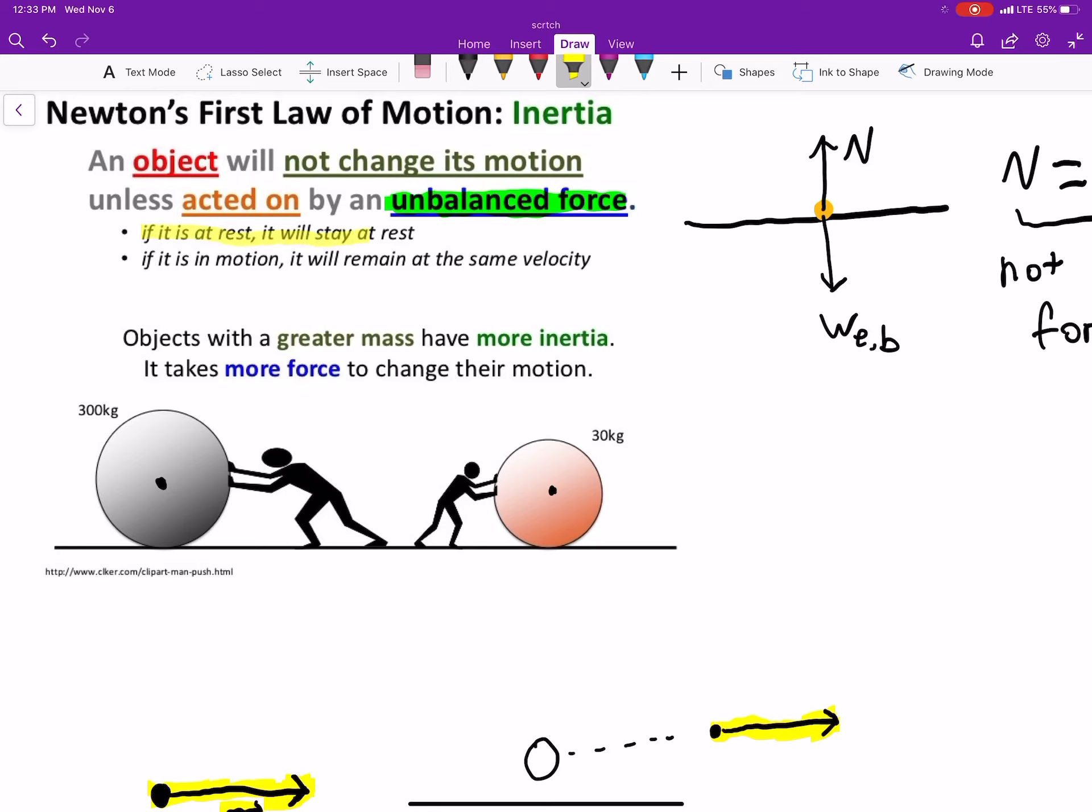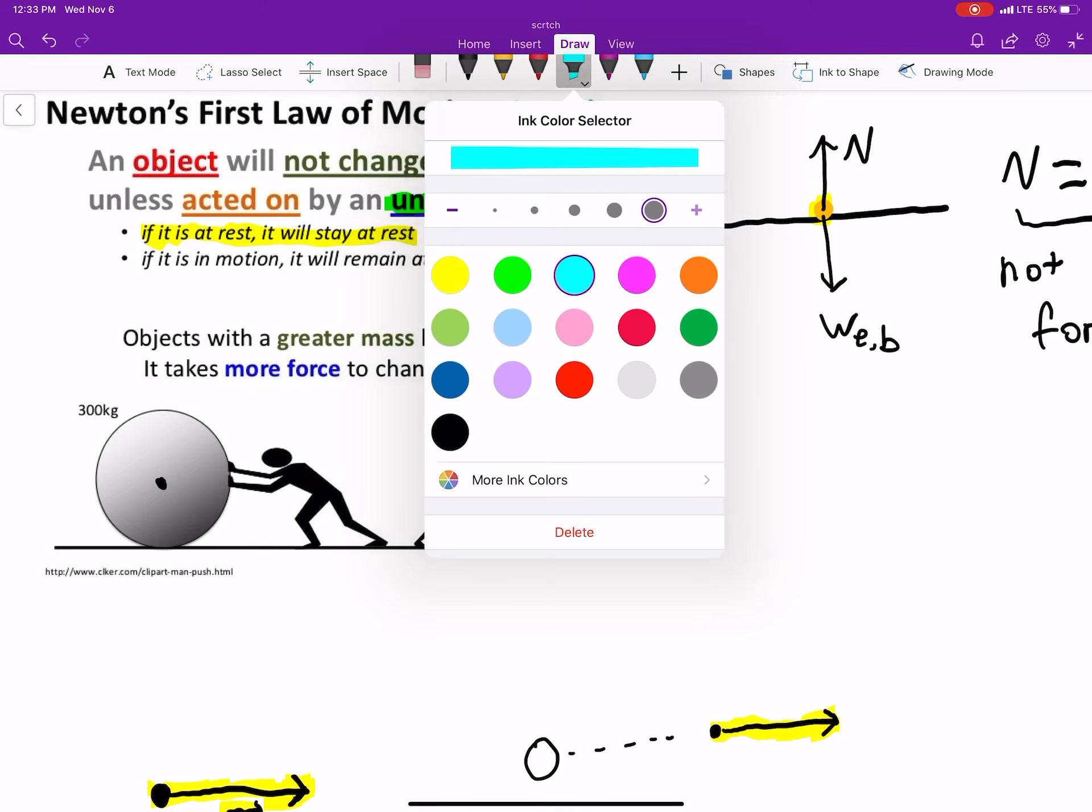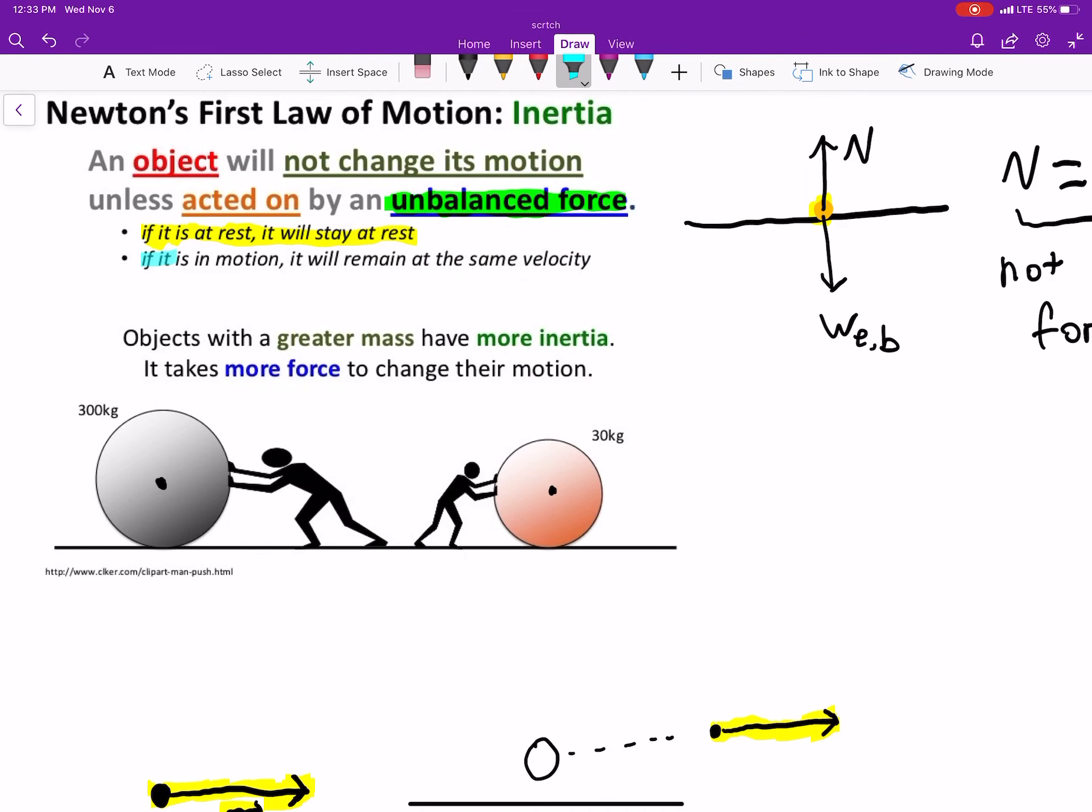If an object's at rest, it'll stay at rest. That makes sense in everyday life. If you put a ball on the table, for example, like we did over here, it's not going to just jump up and down by itself, right? You have to do something to it. The part that kind of tripped people up a little bit is an object in motion will remain in motion at the same velocity, and I want to add direction.